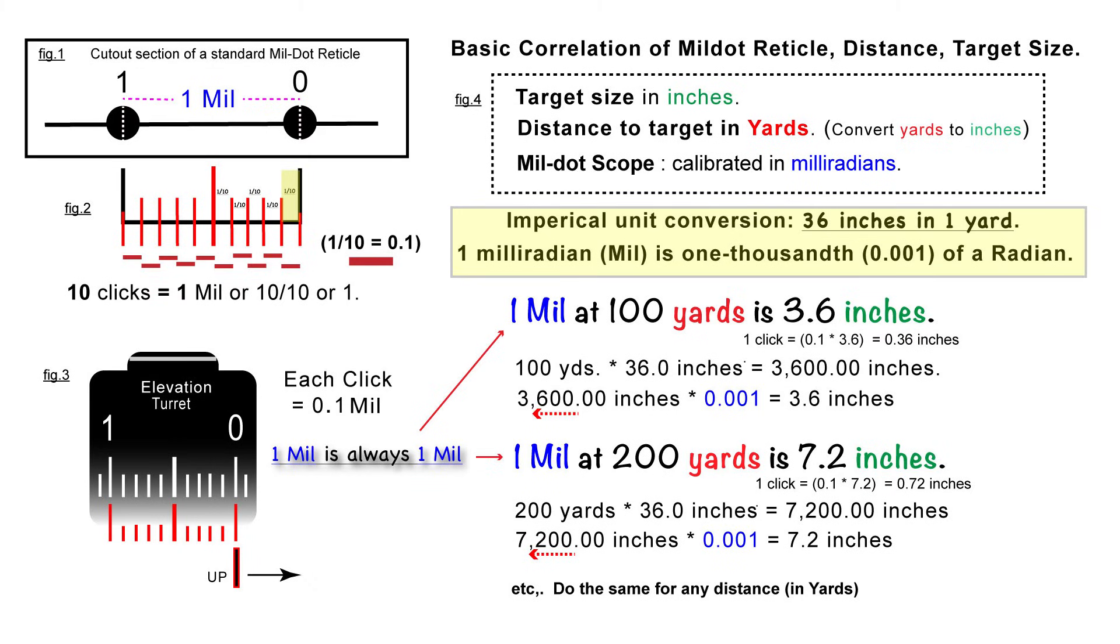And so this just keeps going up, even at one mil at 1,000 yards, it is 36 inches. Now, you can also use meters, so you're not restricted to yards. It always depends on basically what you're using.